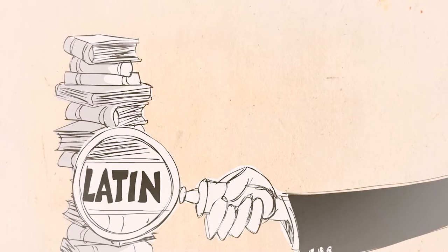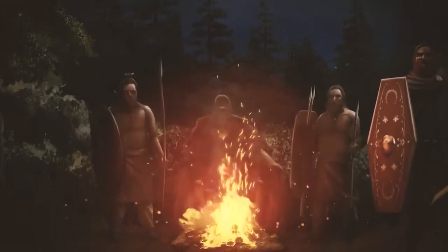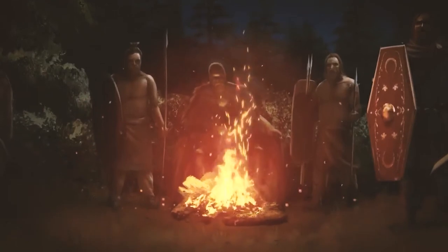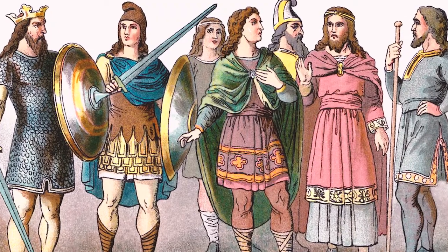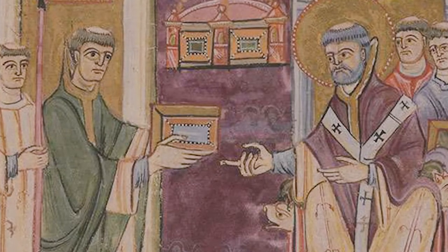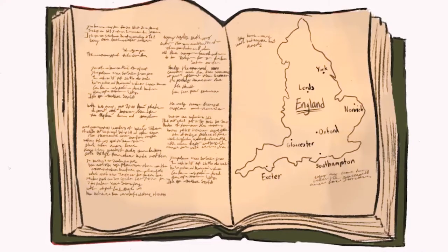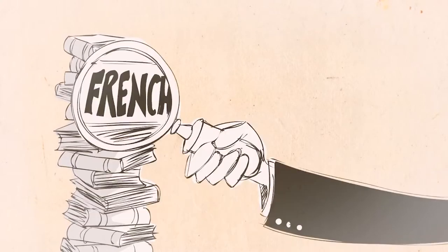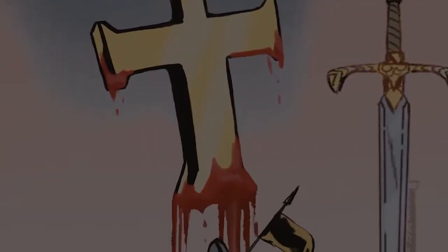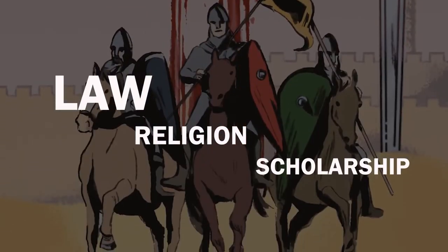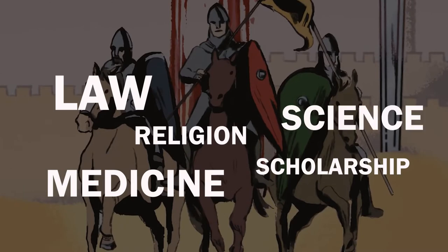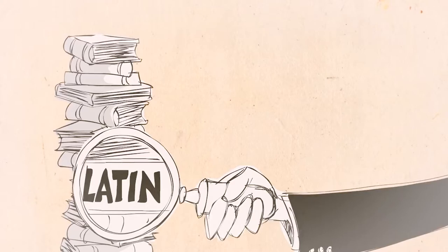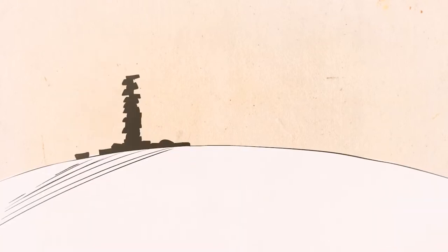It is important to highlight that the most important source of English throughout history has been Latin. There are four separate periods of borrowing: the first was the Germanic tribes period, the second occurred in Anglo-Saxon times, the third was the Christian period, and the fourth was very difficult to determine whether a word was borrowed from Latin or came from French. Vocabularies from the realm of religion, law, scholarship, medicine, science, and literature were often borrowed directly from Latin.